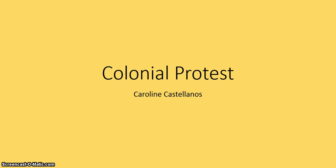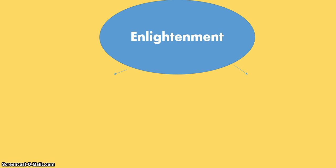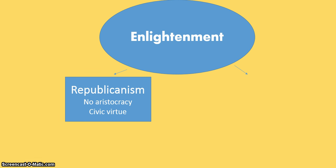Today's segment is about colonial protest in the lead-up to the Declaration of Independence. One big idea is the Enlightenment. Enlightenment ideals are going to lead to our rhetoric and all the ideas of why we should declare independence. We've got two groups. The first will be our Republicans, or the idea of republicanism, which is civic virtue — that citizens should participate in the government. We also have the idea of no aristocracy, so in America we don't have people with titles or nobles, and we don't want that.